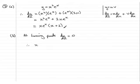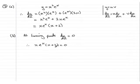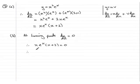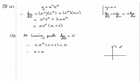Therefore, using the factorized version from part a, x e to the x times (x + 2) equals 0 — which is why the factorized form is more useful here. We have three factors multiplied together equalling 0, so either x equals 0, or e to the x equals 0, or x plus 2 equals 0.